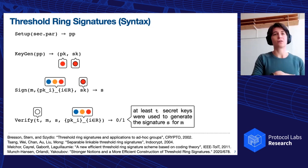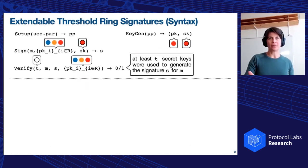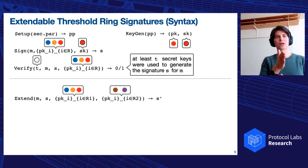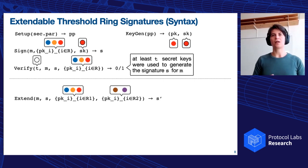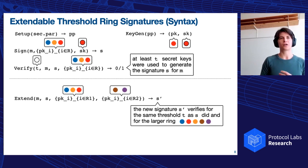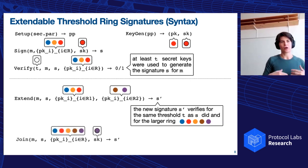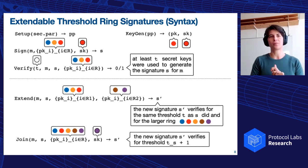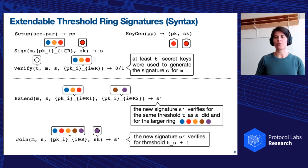So this is what exists already. This is the correctness. So at least this secret key needs to have been used to produce the signature S for the message M. Let's go one step further and talk about what is extendable threshold ring signature. So that's what we do in this paper. In this paper, we add the extend algorithm, which will take as input a message, a signature, an initial ring R1, and a second ring R2, and will produce a new signature S prime. And the idea is that this new signature S prime should verify for the same threshold T as S, but for a larger ring. Essentially, you can think of it as like augmenting the anonymity set with more public keys. And we also want to have a join algorithm that takes a message, a signature, and a ring of public keys, and a secret key, and produces a new signature. And of course, in this case, we want that the threshold of the signature S prime output by the join algorithm is growing by one. So there is one more person endorsing. And what we want to make sure is that the person endorsing is not already somebody that has been used to produce S.